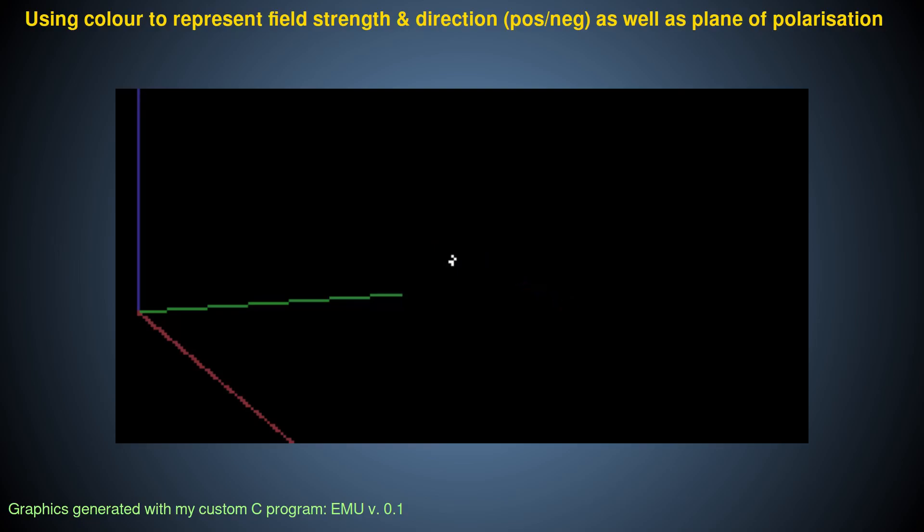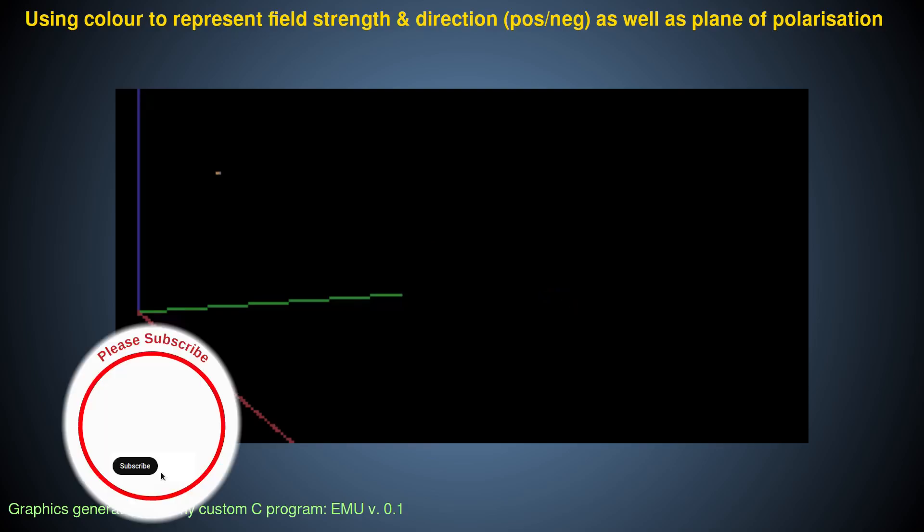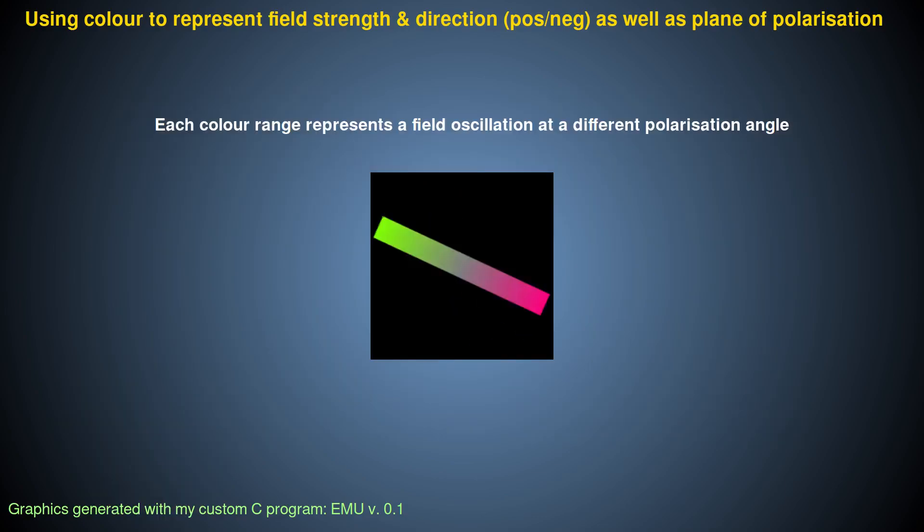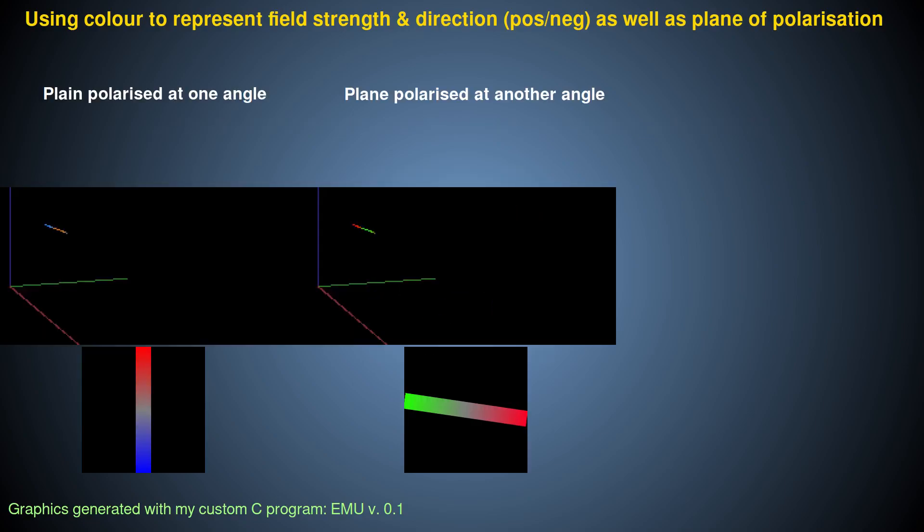While this is still only a graphical representation of field strength—I mean the EM ray does not actually have any color—I think this is less misleading because it does not suggest the ray itself has some kind of physical wavy shape. So, now we can use the other pairs of opposite colors on this color wheel to represent different planes of polarization of the electric field like this.